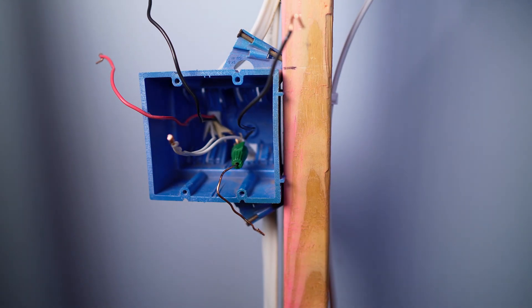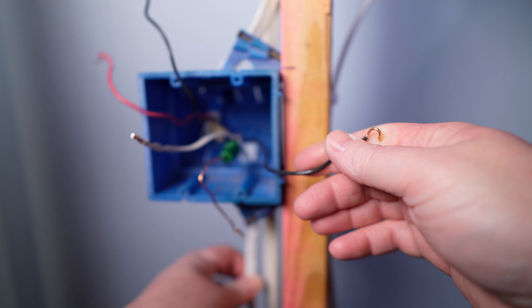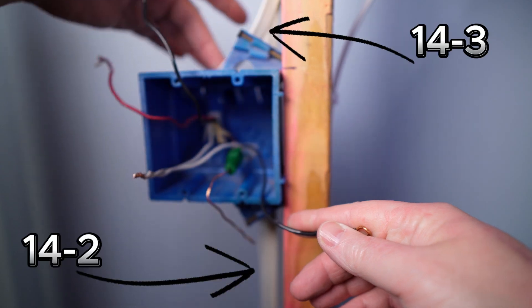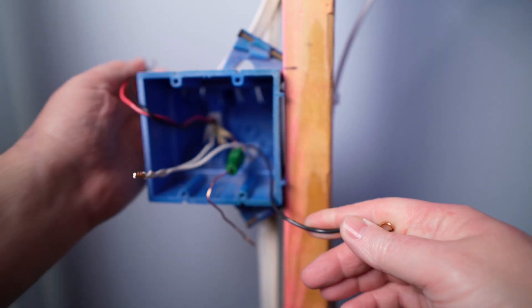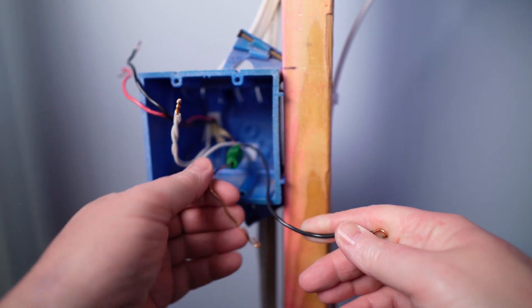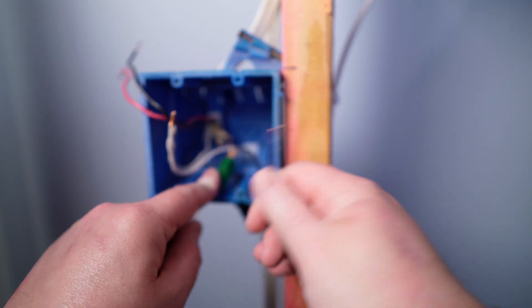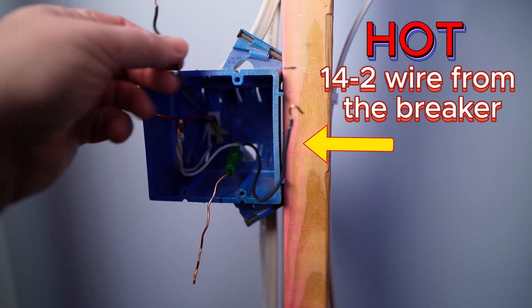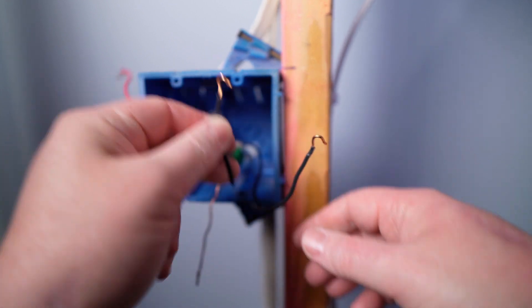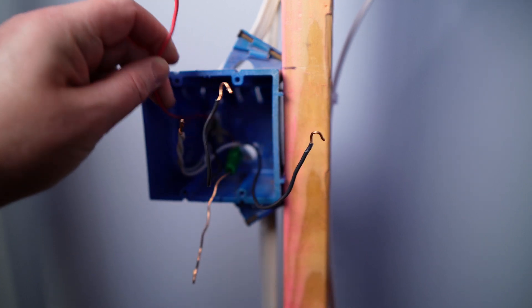All right guys, so what we have here is the hot that's coming in. So this is the 14-2. This is it coming in right here. And this is the three conductor coming in right here. And I've got that separated. The neutrals are twisted together and the grounds are twisted together and bonded, leaving one black wire left. And I have to make a pigtail with this because this is going to be continuous hot that's being sent down to the outlet. This red wire I'm using for the light tail.